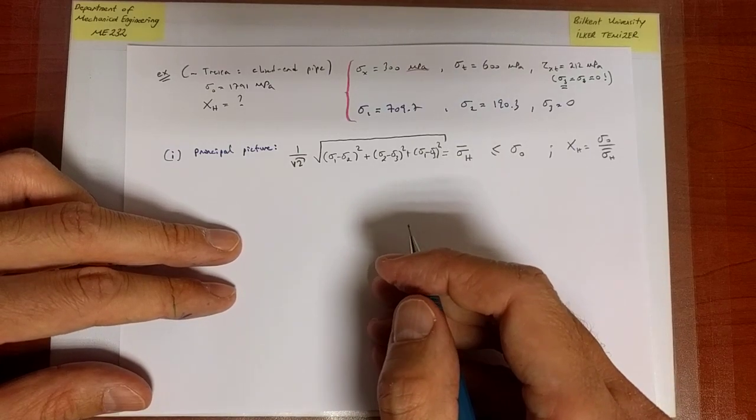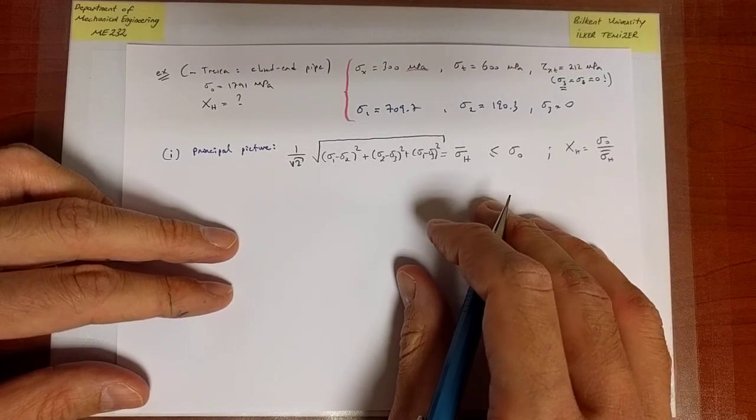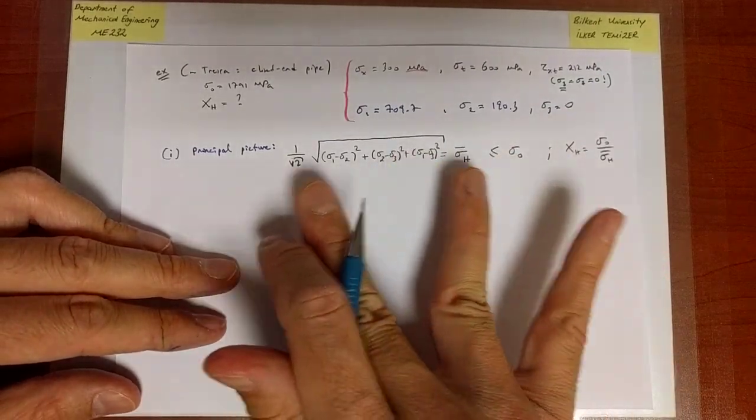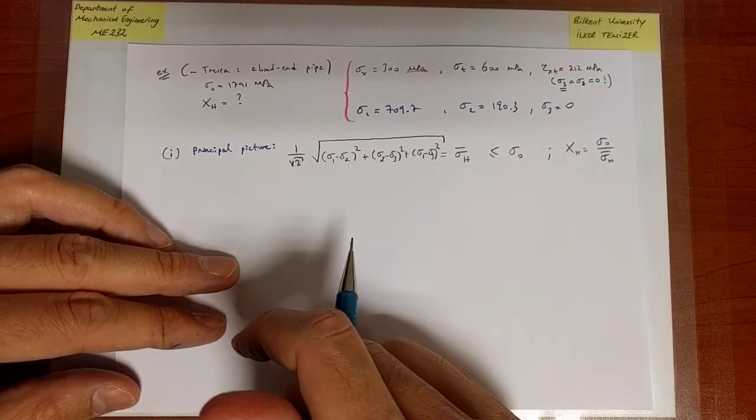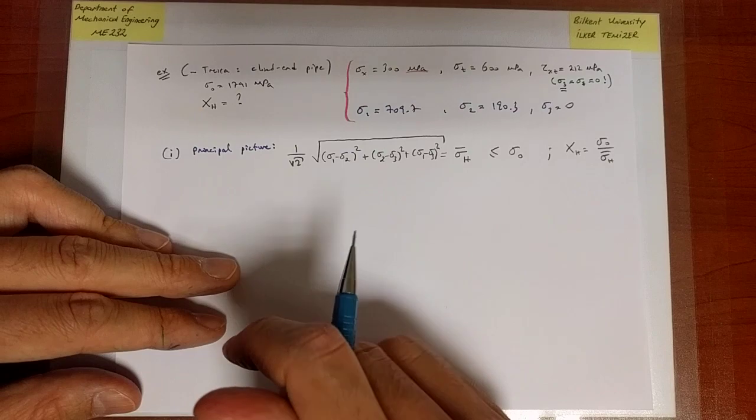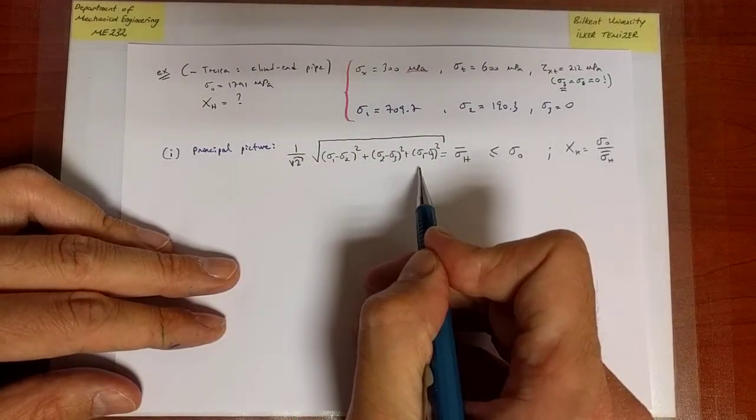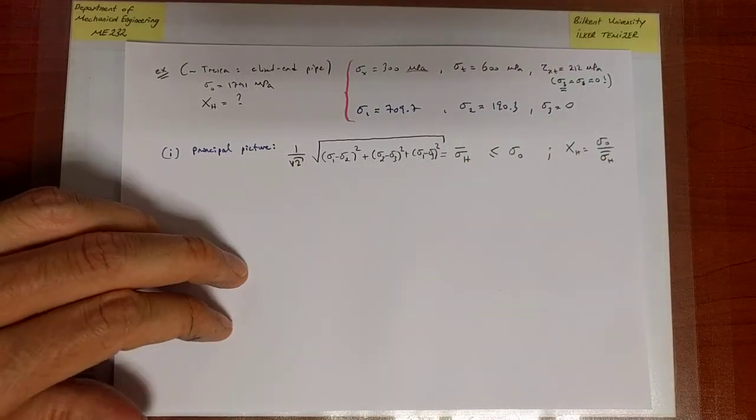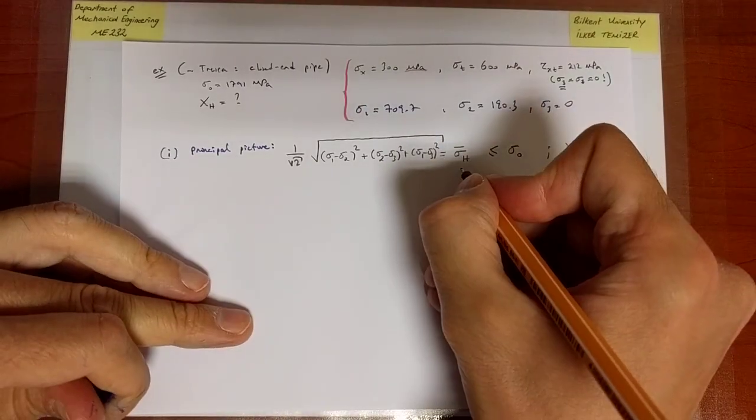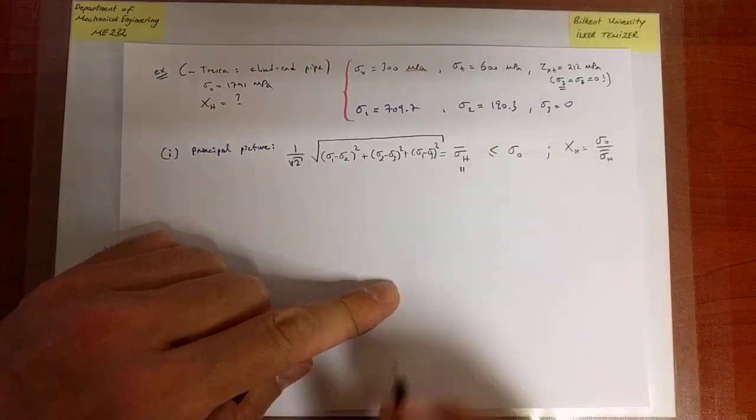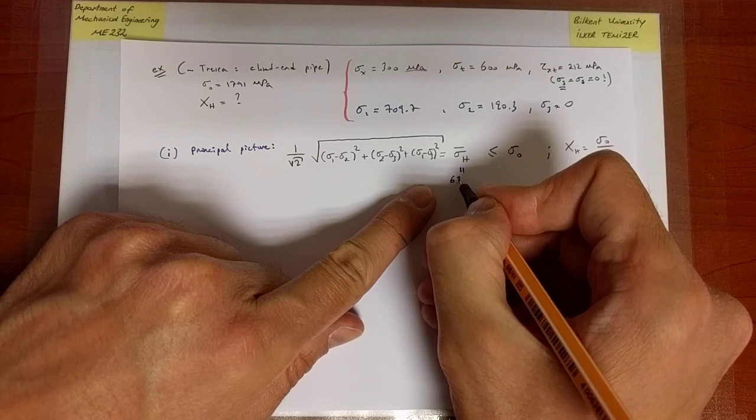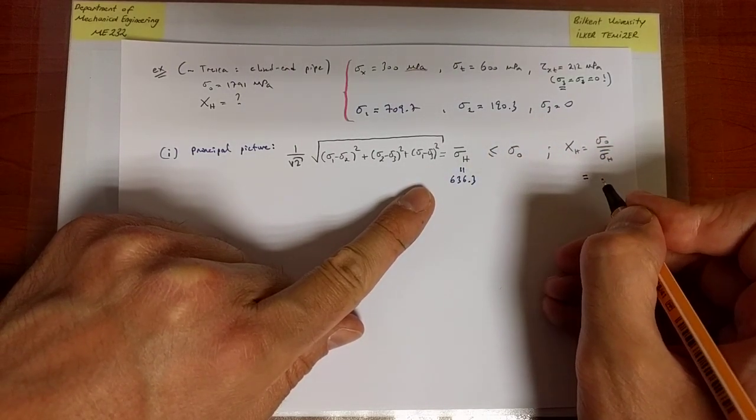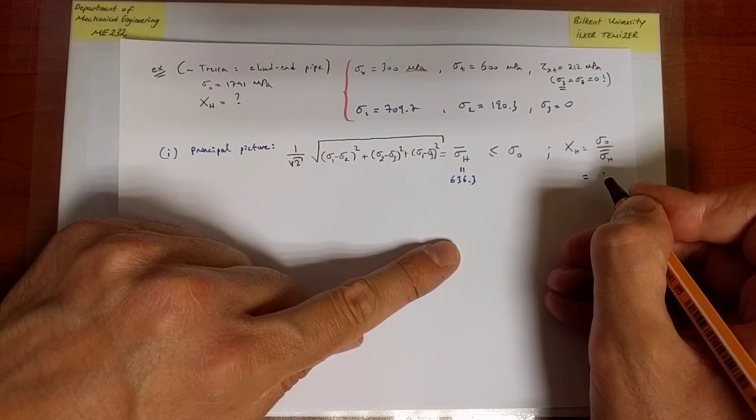In practice we don't have to memorize things, but at this stage I think it's important to think about certain things like how to determine the critical limit. So if you go ahead and plug in these values into that equation, you will find with this principal picture that sigma_bar_h equals 636.3 MPa. Sigma_0 is given, and therefore you will find a safety factor of 2.81.